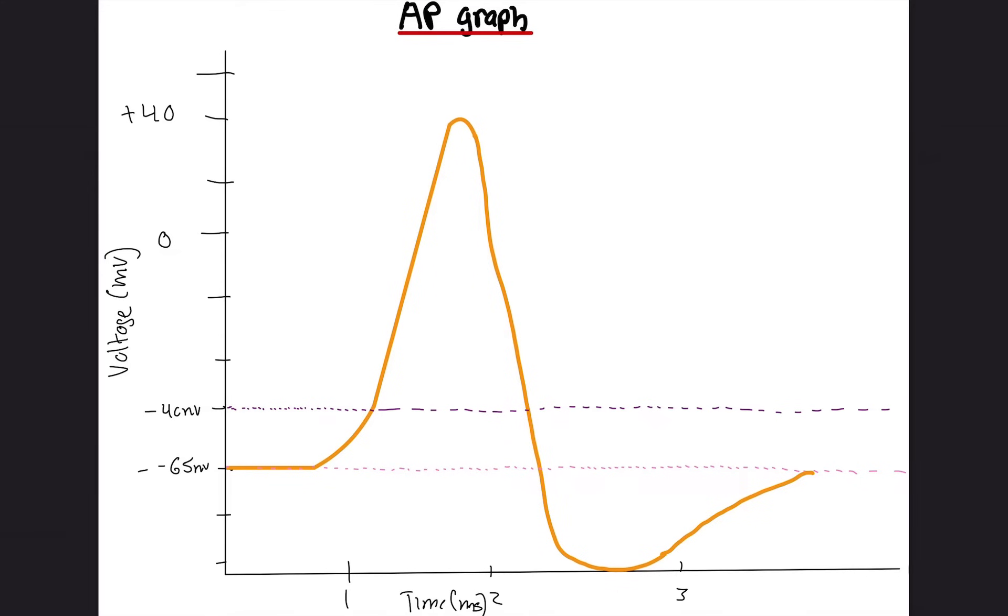What this is showing is a graph of the voltage in one single neuron. So let's go slowly.